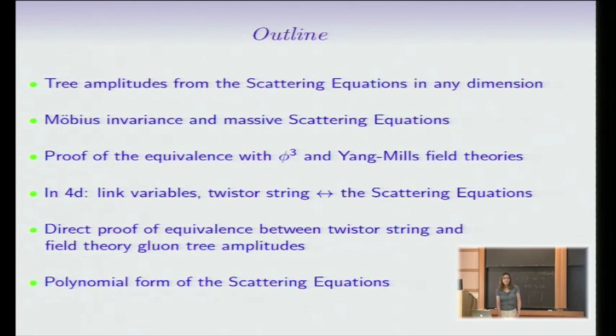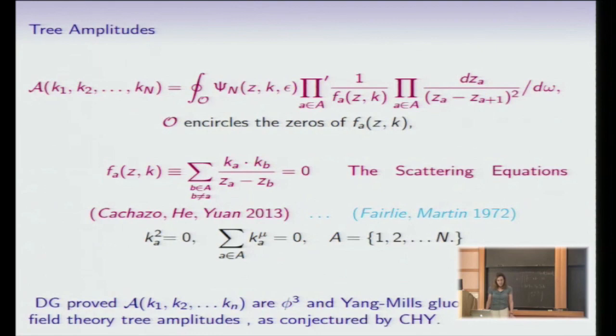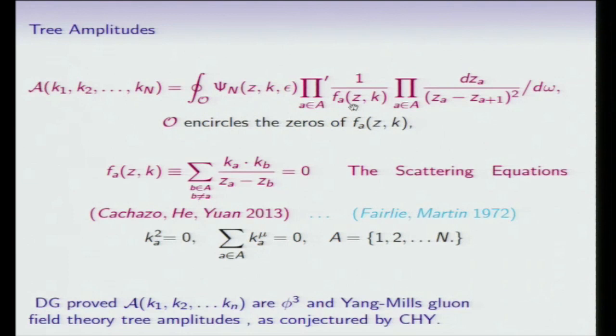So Cachazo, He, and Yuan made a proposal and gave evidence that this multidimensional contour integral is equal, in fact, to a field theory amplitude of either phi-cubed theory or Yang-Mills theory, and they also had a proposal for gravity, depending on the form of this function psi n. Here, the contour encircles the zeros of the functions f in the denominator, but not the poles given by this factor. And these functions, these n functions, are given by this sum.